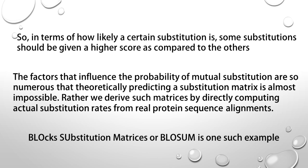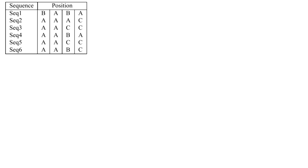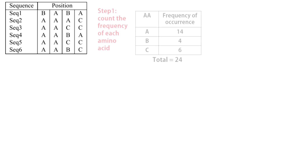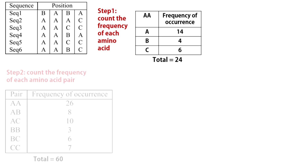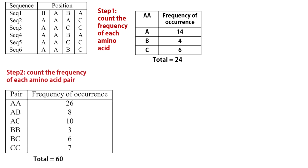BLOSUM was developed by Henikoff and Henikoff in 1992. Imagine a simple case with three alphabets A, B, and C, and a block of sequences consisting of only six sequences. Using this data block, first we count the frequency of occurrence of each amino acid. A occurs 14 times, B occurs 4 times, and C occurs 6 times. Now we count the number of pairs of amino acids aligned in the same column.